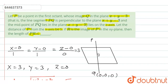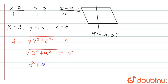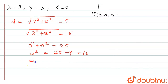Let the z-coordinate be 'a'. The distance from the x-axis equals the square root of y squared plus z squared equals 5. So the square root of 3 squared plus a squared equals 5. Squaring both sides: 9 plus a squared equals 25, so a squared equals 25 minus 9 equals 16, giving a equals 4.